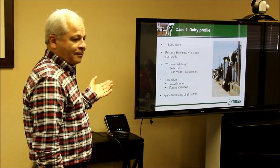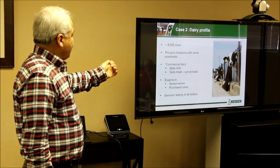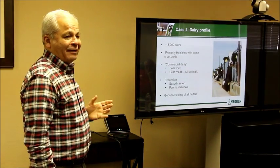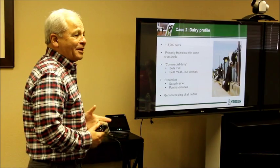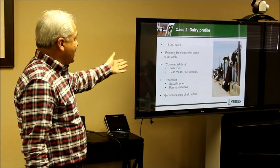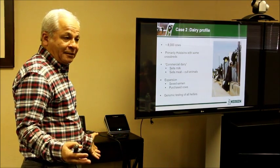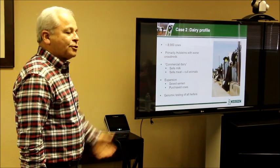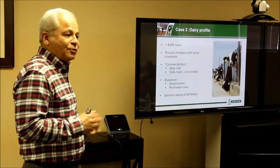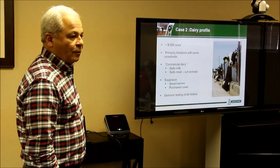Here's another case — this particular one is in-state. We did about 8,000 cows and they have some crossbred animals. As a matter of fact, he didn't have enough information for us to identify which ones were crossbred, so it took quite a while to pull them out. As a commercial dairy, he sells milk and sells culled animals for meat. He's expanded and was also purchasing cows, so he didn't know what he was getting — that's one of the main reasons he wanted us to test. So we tested all the heifers.